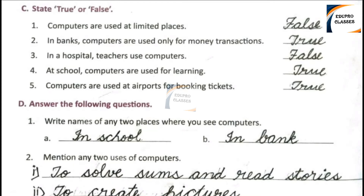Number 4: At school, computers are used for learning. This statement is right, so we write True. Number 5: Computers are used at airports for booking tickets. This is the right statement, so we write True.